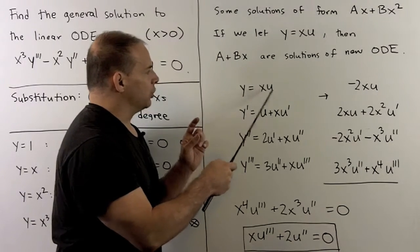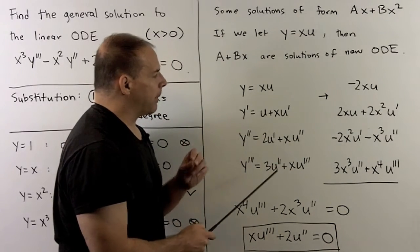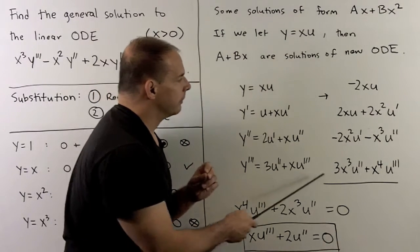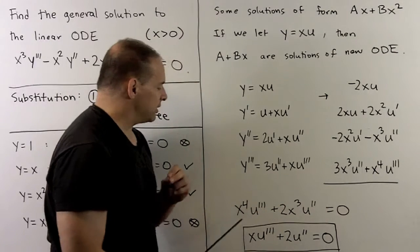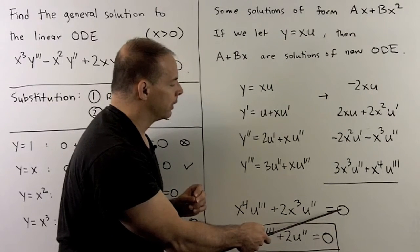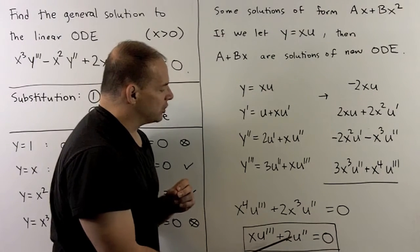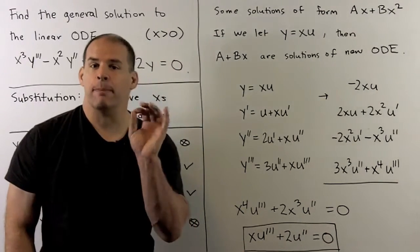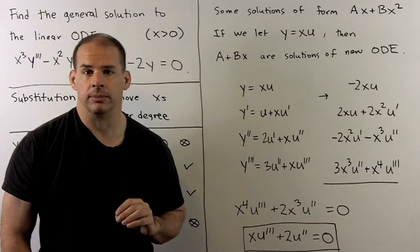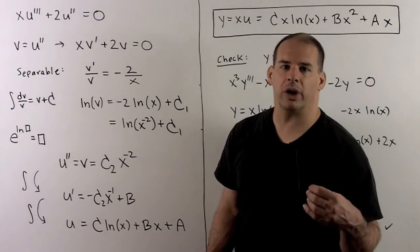After substituting and simplifying, setting U prime equal to zero where applicable, we arrive at a much nicer looking equation than the original. So now it's just finishing the problem off. We substitute V equal to U double prime to lower the degree of our new equation.